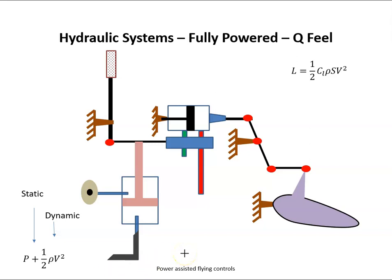When an aircraft is flying, the control surfaces generate lift in that direction. Lift is equal to one half coefficient of lift times rho S V squared. When we get to high speeds, this is a squared value.